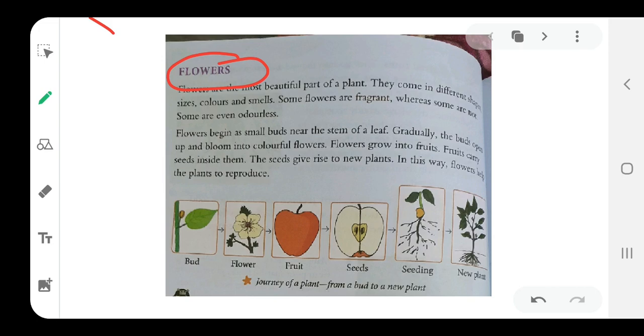Whereas some may not even have smell, there is no smell, they are colorless. Now how does a flower begin? A flower begins as a bud. If you see in this picture, there is a bud over here on the base of the leaf, near the stem and the leaf.